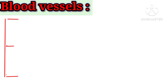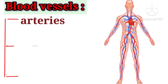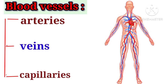There are 3 types of blood vessels: arteries, veins, and capillaries. Arteries carry oxygenated blood from the heart to all body parts. Veins carry deoxygenated blood from all body parts to the heart. Arteries and veins further divide into fine capillaries. Capillaries are the smallest blood vessels.